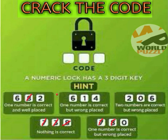Looking at the second clue, the number six appears here. This six is wrong because one number is correct and well placed according to the first clue. The second hint says one number is correct but in the wrong place, so six is in the wrong position. Cut down the number six.